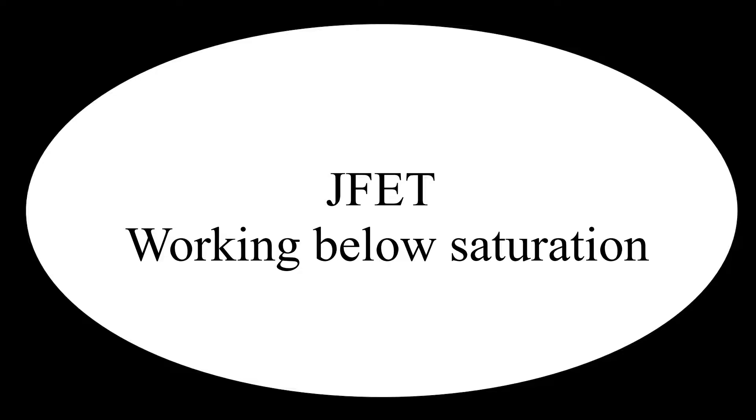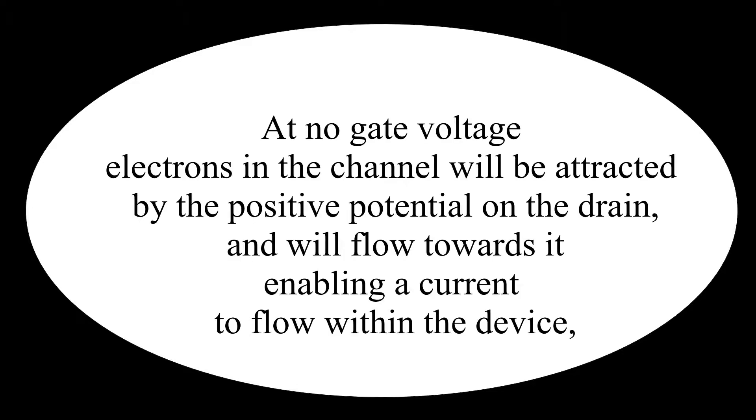JFET working below saturation: assuming an N-type channel where current flows in the channel, the situation becomes slightly different. With no voltage at the gate, electrons in the channel will be attracted by the positive potential on the drain and will flow towards it, enabling a current to flow within the device.